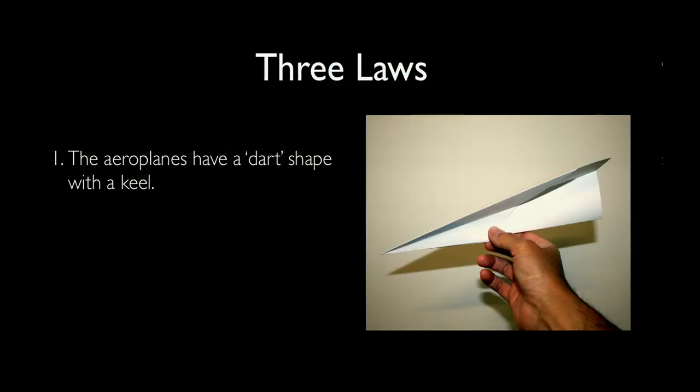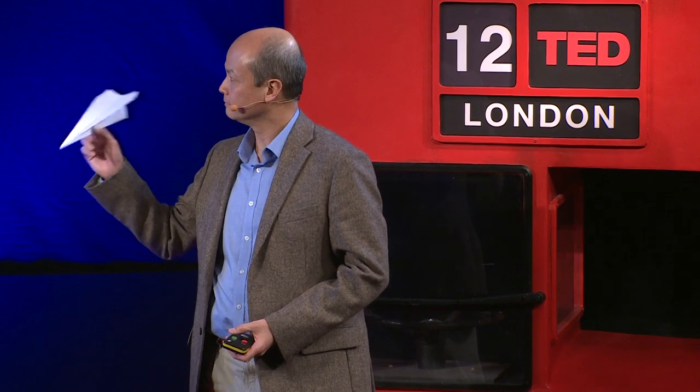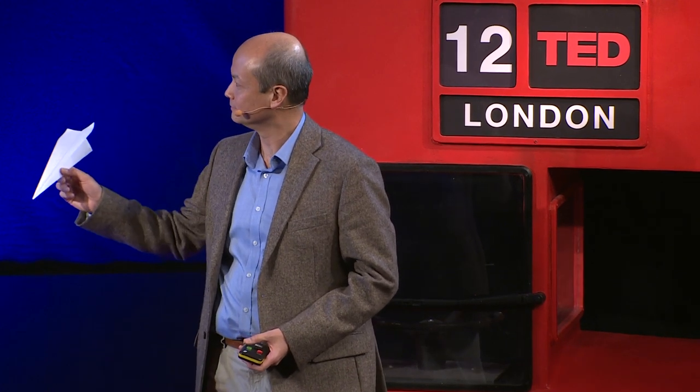First law of paper airplanes: they have to have a dart shape, like this, with a keel. Second law: they are thrown hard like a javelin.